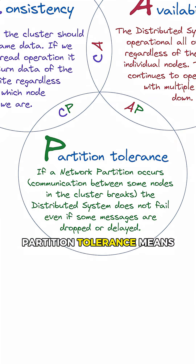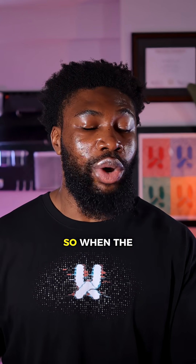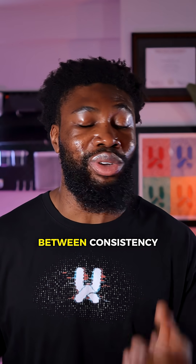Partition tolerance means the system continues to work even when network failures split it into isolated groups of nodes. In a distributed system, partition tolerance isn't optional — it's bound to happen. Networks fail; it's not an if, it's a when. So when the network fails, the system still has to work, and now you're forced to choose between consistency and availability.